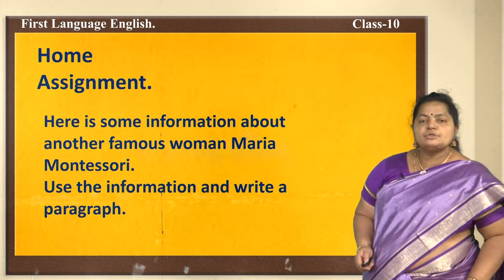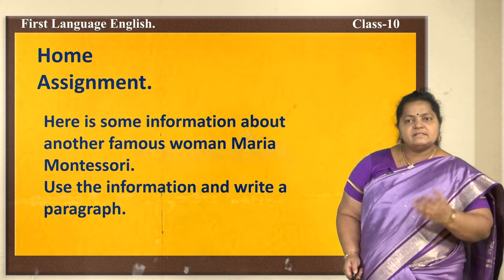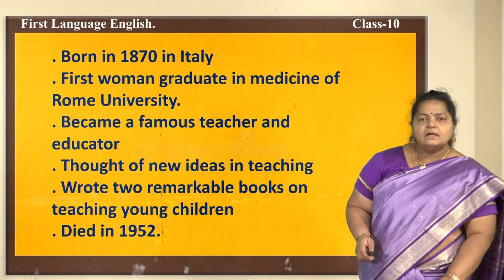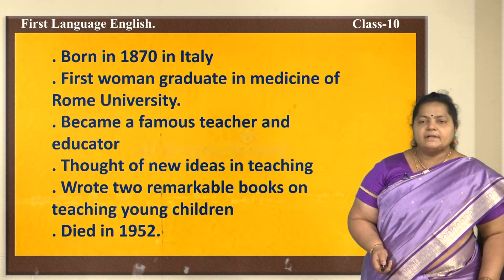Here is the information about Maria Montessori: she was born in 1870 in Italy; she was the first woman graduate in medicine from Rome University; she became a famous teacher and educator; she thought of new ideas in teaching; she wrote two remarkable books on teaching young children; she died in 1952. Take all these sentences and write them as a paragraph. Hope you enjoyed this lesson today and learned more about Anne Frank. Thank you, children.